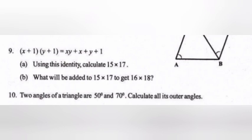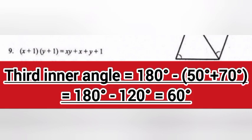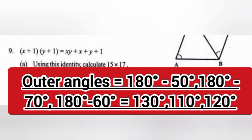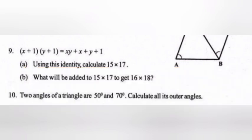10. Two angles of a triangle are 50 degrees and 70 degrees. Calculate all its outer angles. Answer: Third inner angle equals 180 minus (50 plus 70) equals 180 minus 120 equals 60 degrees. Outer angles equal 180 minus 50, 180 minus 70, and 180 minus 60, giving 130 degrees, 110 degrees, and 120 degrees.